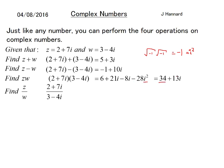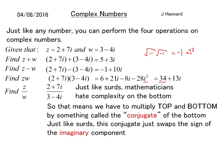z over w, a bit more interesting: (2 + 7i)/(3 - 4i). Just like surds, mathematicians absolutely hate complexity on the bottom, so we have to multiply top and bottom by something called the conjugate of the bottom. Thinking of anti-surds here, you would just change that to a plus. You do exactly the same with complexity—you just change the sign in the middle so we can get rid of it. Just like surds, the conjugate just swaps the sign of the imaginary component.